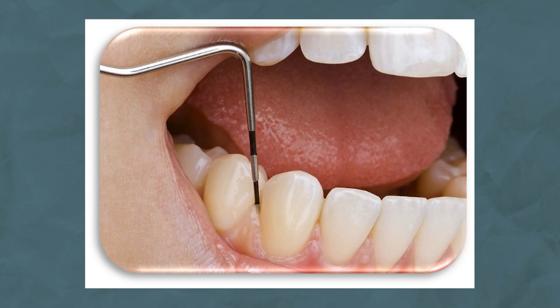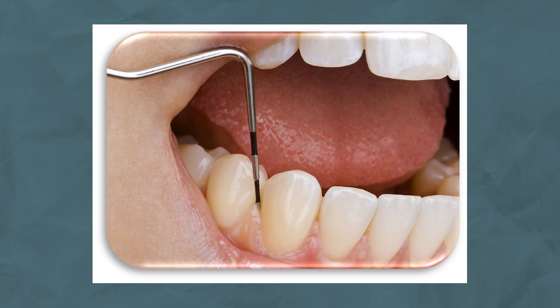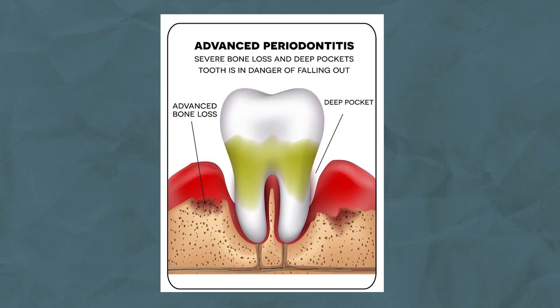One way a dentist can identify gum disease is by checking your gum pockets. A gum pocket is a space which exists between your teeth and your gums. Your gums are attached to the roots of your teeth, which help support and secure your teeth in place. The gums separate from your teeth just below the crown — the top part of your tooth — creating a small space called the gum pocket. In a healthy mouth, the gum pocket will usually be between one to three millimeters deep, and individuals with gum disease will have deeper pockets of more than four millimeters, due to the destruction of gum tissue attached to the roots.